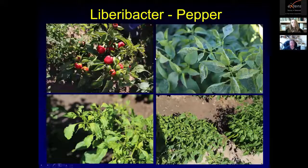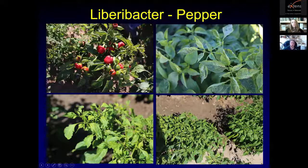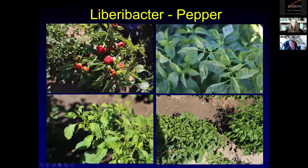If you look at potato tubers from infected plants, you see brown striations on a fresh-sliced tuber. The name zebra chip comes from the dark brown discolorations that appear when you fry these slices — obviously if you're growing potatoes for the potato chip industry, they would not take those. On peppers, the newer leaves usually have a yellow-green color and the plants are often stunted. A bell pepper may look normal except it's only about an inch and a half in size because the plant was very stunted.